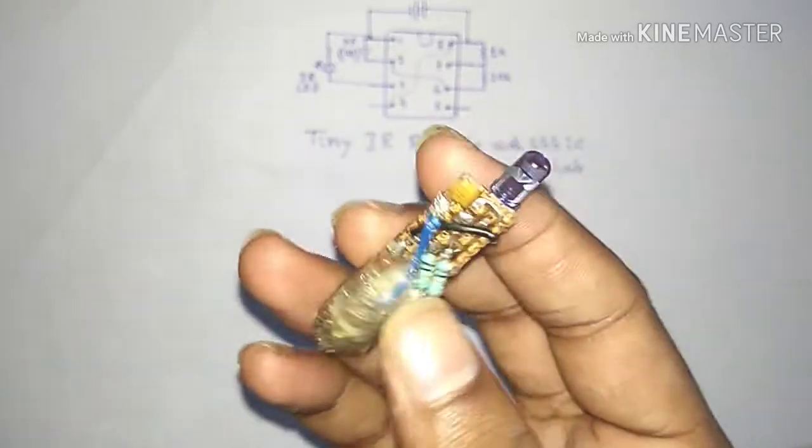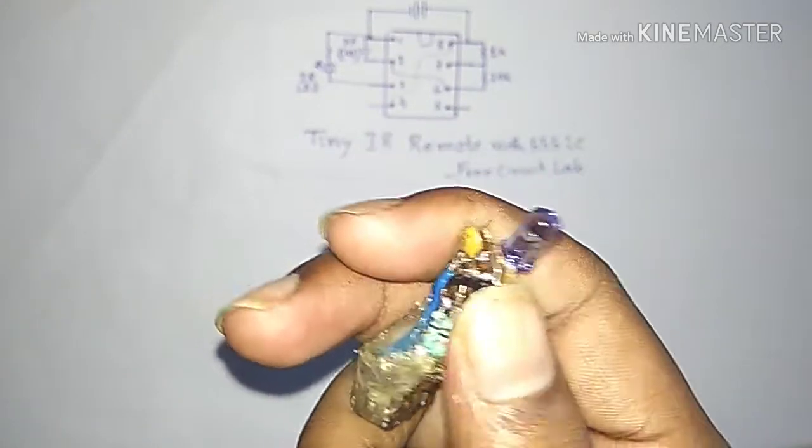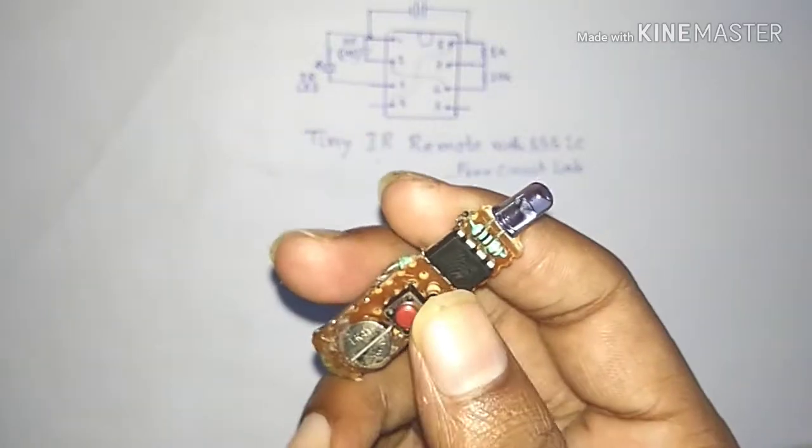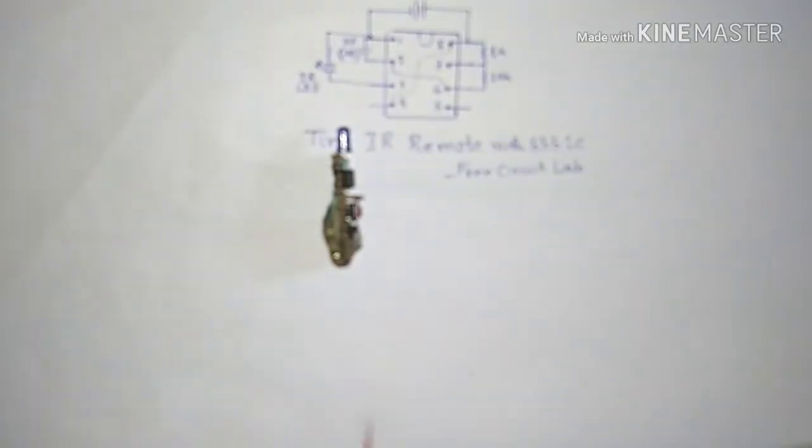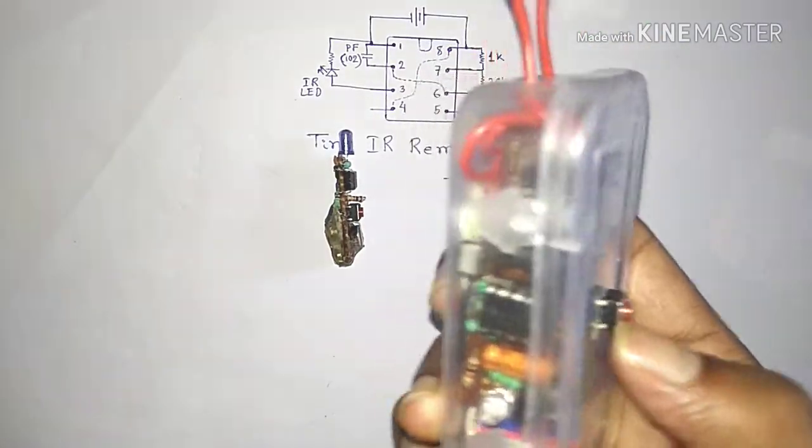And it can make the carrier frequency of an IR LED or IR remote which is around 37 to 38 kHz which can easily sense my remote control relay project. You can see the link on the i button if you have not seen it before.